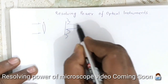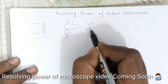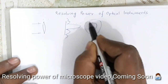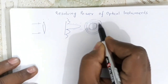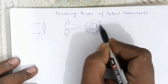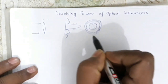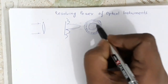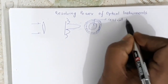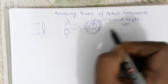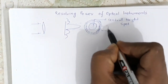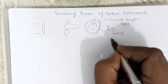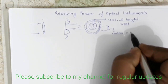At the centre we will get a bright spot, then there is a dark region, and then again you will get a bright spot. You will get continuous bright and dark spots, and the thickness of the bright spots keeps on decreasing. This is the central bright spot, and its radius is given by R₀ = 0.61...